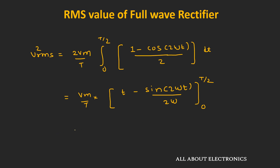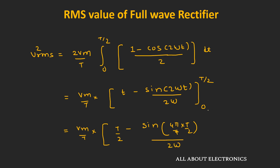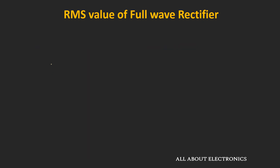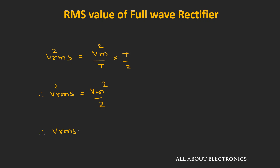Substituting sin²(ωt) = (1 − cos(2ωt))/2 and integrating, we get V_RMS² = (Vm²/T) × [t − sin(2ωt)/(2ω)] from 0 to T/2. Putting in the limits, sin(2π) = 0 and sin(0) = 0, so those terms vanish, giving V_RMS² = Vm²/T × T/2 = Vm²/2. Therefore, the RMS value for the full-wave rectifier is equal to Vm/√2.